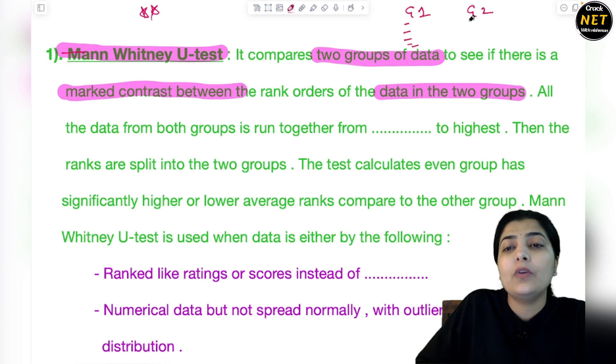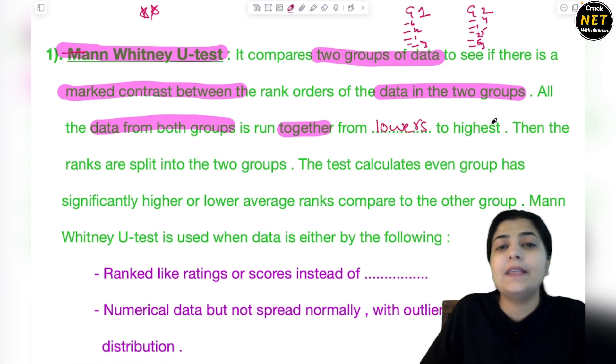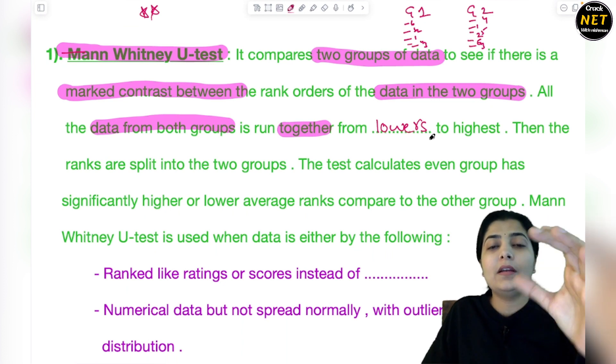Suppose this is group one and this is group two. In group one you're given particular data, in group two you're also given particular data. You give them ranks - rank one, two, three, six, five, four like that. Same way here: one, two, three, six, five, four. Then you match them and compare them to see if there's any difference in their ranks.